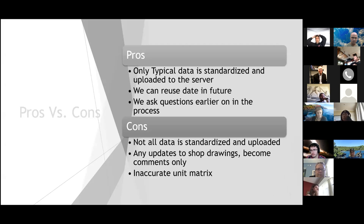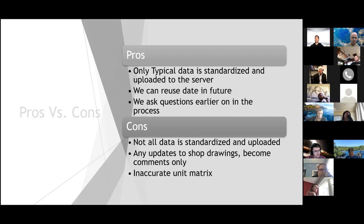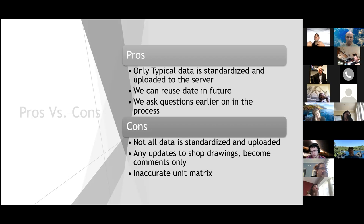Pros and cons of stage one. The pro is that only typical data is standardized and uploaded — the data we create gets standardized, uploaded to the server, and is ready to be reused in a separate project. Just like Ardenwood used a lot of families from Brokaw. We also use shop drawings a lot and see family names early before metal takeoff, so we get to ask questions early on in the process. Some of the cons: not all the data gets standardized and uploaded to the server. Only the typical gets standardized, and anything created after hasn't been fully brought back to the server — we've tried but haven't found a fully effective method yet.